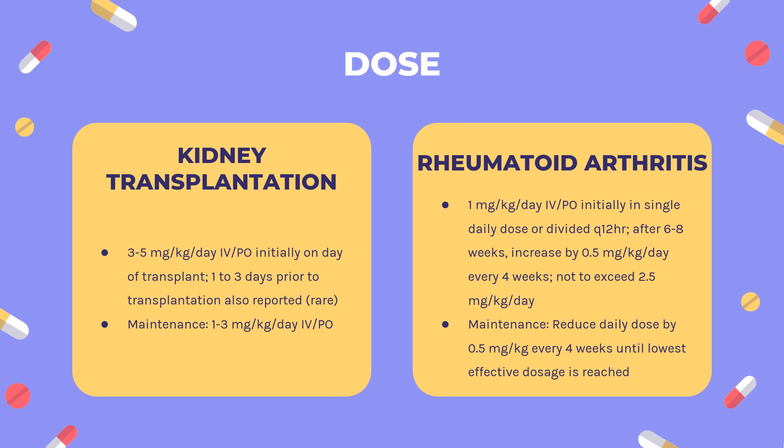Maintenance: Reduce daily dose by 0.5 mg/kg every 4 weeks until the lowest effective dosage is reached. Lupus nephritis (off-label): Induction and maintenance therapy per 2012 American College of Rheumatology Guidelines — 2 mg/kg/day orally, with or without low-dose corticosteroids. Crohn's disease (off-label): Maintenance or reduction of steroid — 2–3 mg/kg orally once daily.